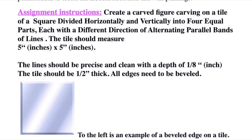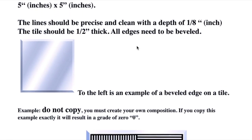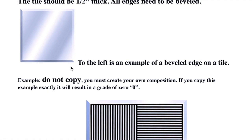Here are your assignment instructions. Create a carved figure carving on a tile — a square divided horizontally and vertically into four equal parts, each with a different direction of alternating parallel bands of lines. The tile should measure five inches by five inches — that is your dimension. The lines should be precise and clean, with a depth of one-eighth inch. The tile should be one-half inch thick. All edges need to be beveled. A bevel is a slight angle that you put onto the tile using your tool.